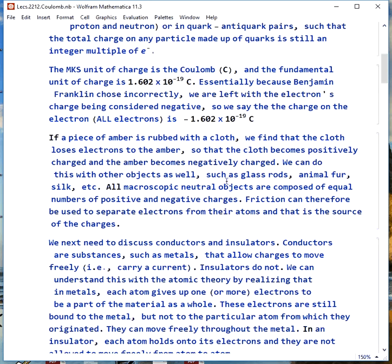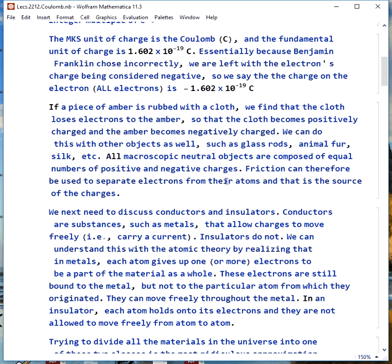The MKS unit of charge is the coulomb, and the size of the charge on the electron in these units is 1.602 × 10^-19 coulombs. Basically, because Benjamin Franklin guessed wrong, we're left with the idea that the electron's charge is negative. So we say the charge on the electron is -1.602 × 10^-19 C.